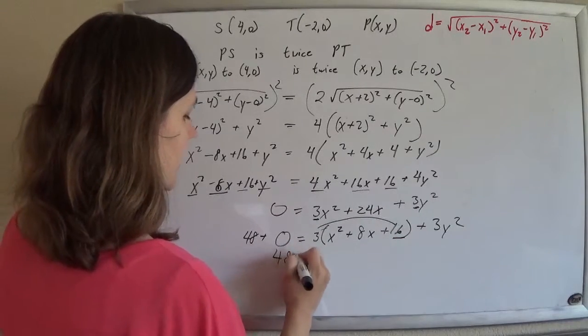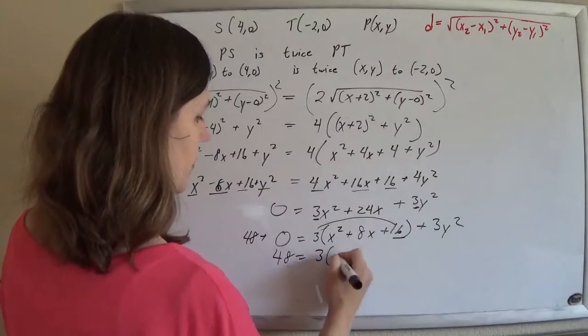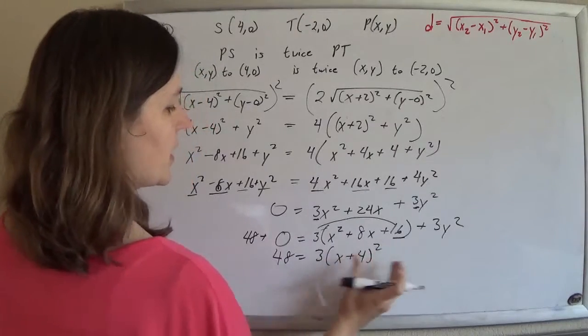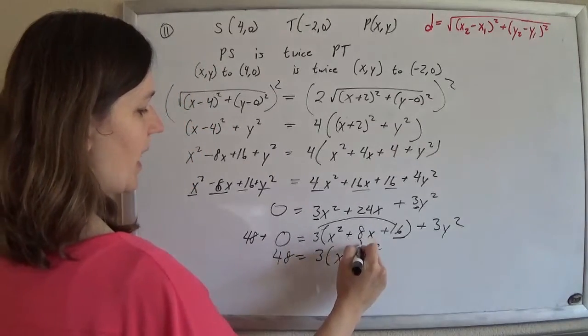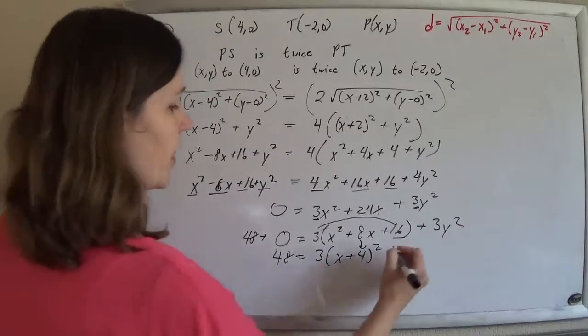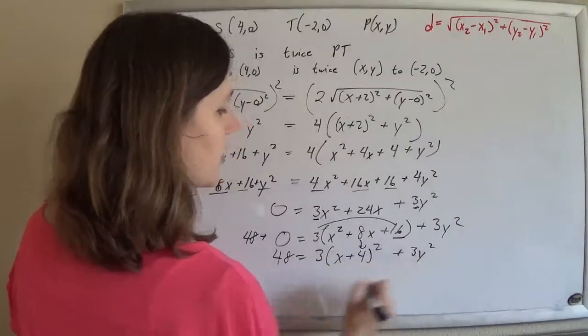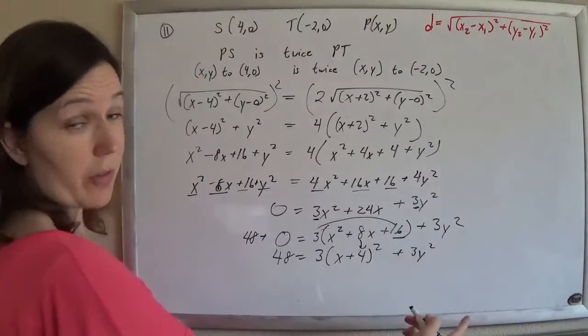And the whole reason I did that was because that makes a perfect square. That's (x+4) times (x+4). It's always half of that middle number there. And then plus that 3y², and that's already perfect, right?